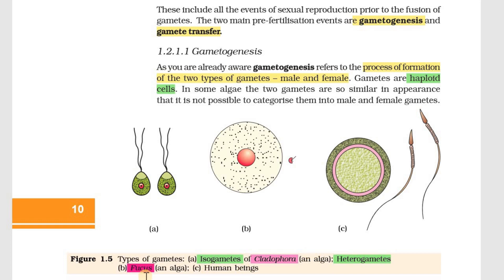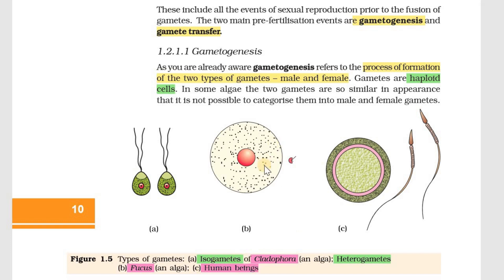For example, male gametes are called antherozoids or sperm. Female gametes are called ova or eggs. This is shown in figure 1.5B as an example of heterogametes. In the case of human beings, the male gamete is sperm and the female gamete is a round egg – they are morphologically different, making them heterogametes.